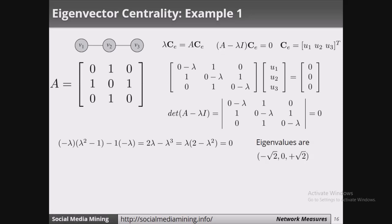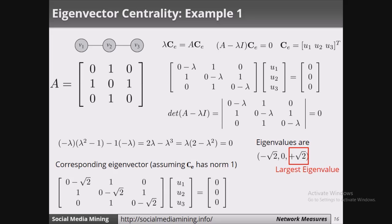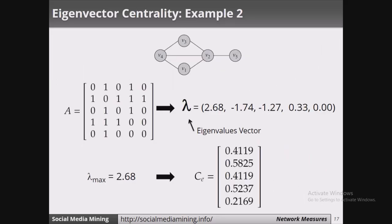With this equation we get the eigenvalues as minus square root of 2, 0, and plus square root of 2. Based on the Perron-Frobenius theorem we take the highest lambda value, which is square root of 2, and replace this largest eigenvalue in the formula. With this eigenvalue, the centrality values we get are 1/2, root(2)/2, and 1/2. Node v1 and v3 have the same centrality values.